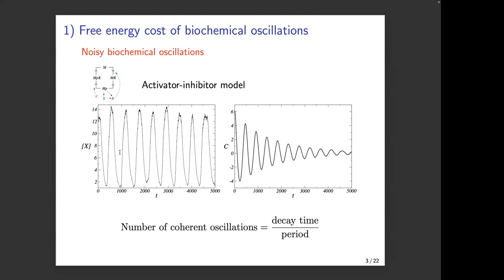The uncertainty in the period means that if I run two different time series, after a certain number of periods they will dephase. To quantify the precision of these oscillations, you look at a correlation function — you do many different trajectories, sum them, and get the correlation function. What you see is the oscillation with an exponential decay of the amplitude. This exponential decay is due to fluctuations in the period. The number of coherent oscillations is defined as the decay time divided by the period.